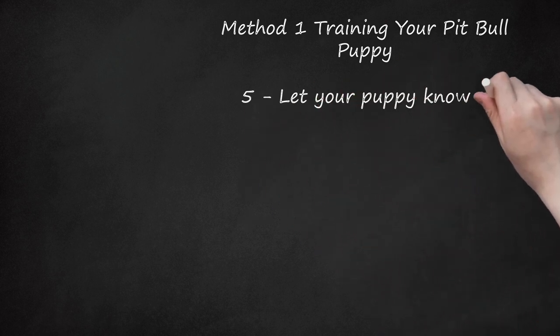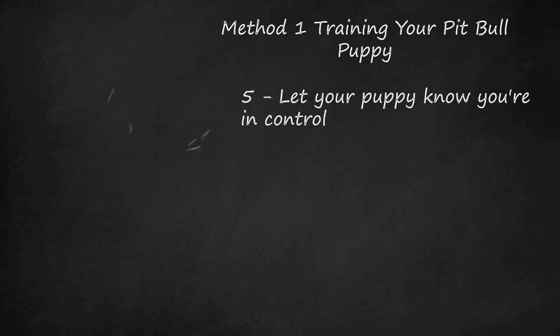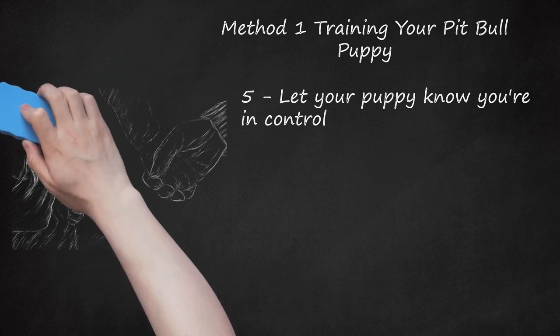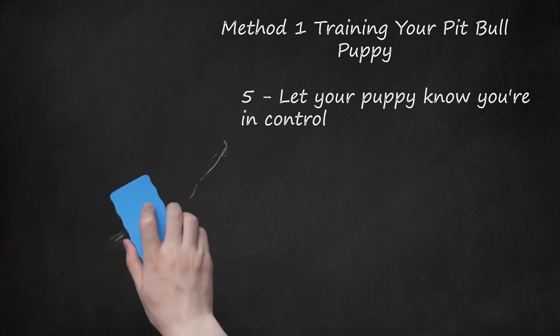Let your puppy know you're in control. You may want to make your puppy repeat certain actions or commands, especially if he didn't obey. This signals to your pit bull that he didn't do something correctly and needs to keep trying until he succeeds. Give your pit bull plenty of chances to follow your commands. Your puppy should get used to you handling his feet, ears, tail, and body. This signals that you're in control and will make it easier to groom your puppy, administer medications, and clip his nails.